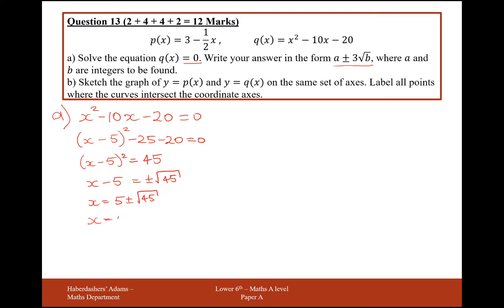So if we pull out a 9 out of this, we're going to get 5 plus or minus 3 root, 9 times 5 is 45, so 3 root 5. So here effectively, a is representing the number 5 and b is representing the number 5.